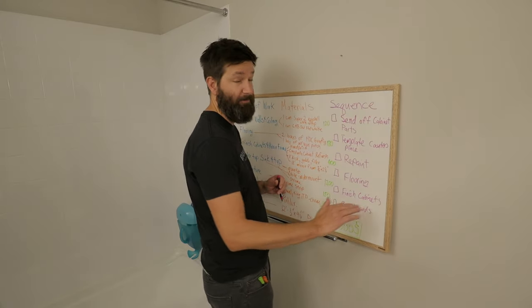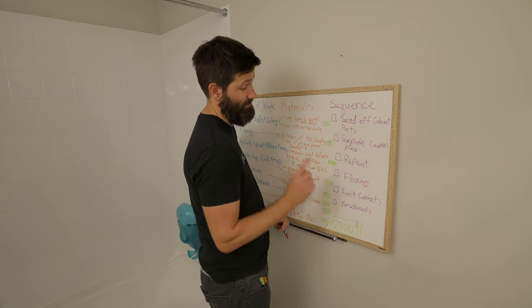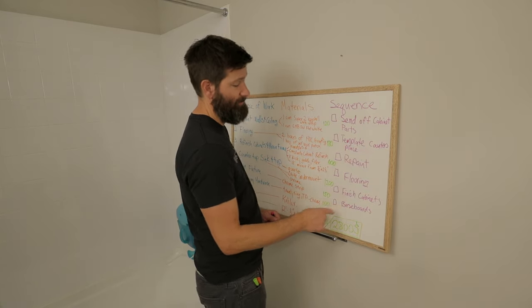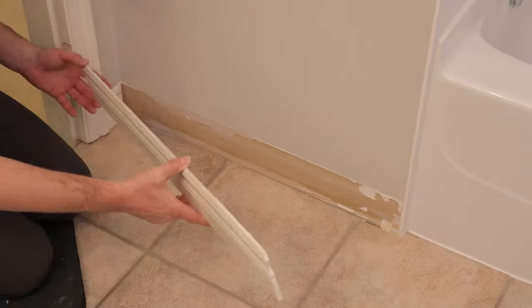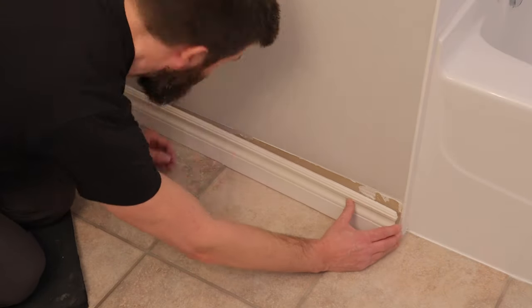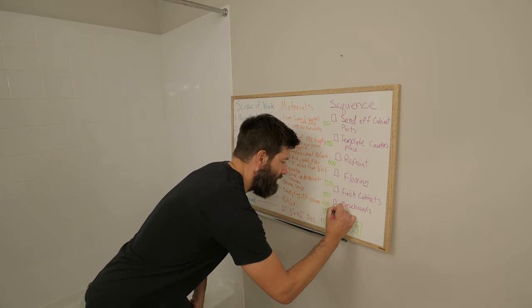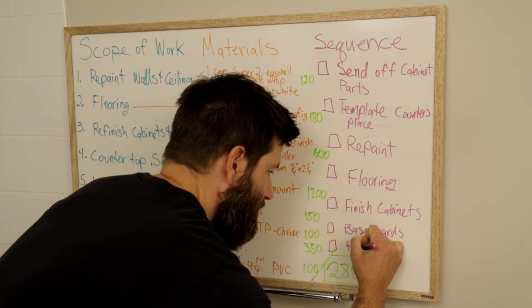And now that the cabinets are all finished off, the kicks are into the wall. Next thing I'm going to do is the baseboards. Now the baseboards, I'm going to pre-paint and I'm actually thinking I might glue them onto the wall so there's not going to be any nail holes. And then after the baseboards are on, then you can install the toilet.